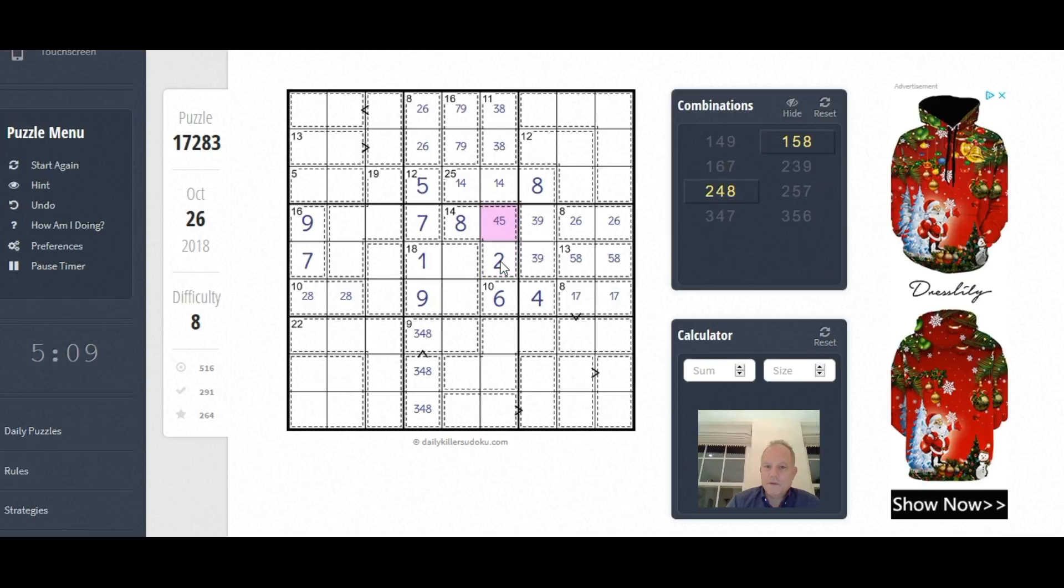That resolves whether that was 1, 5, or 2, 4. We've got 3 and 5 left to fill in. The 5 here fixes which order they go in. We get a 3 there now. This 3 has sorted out the order of those. That 4 has sorted out a particular order of those two. These are now 5, 1. These are 4, 6 in some order.